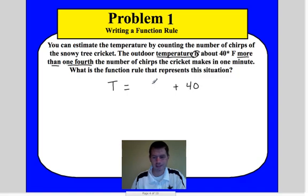The number of chirps. So let's say we'll call it C is the chirps that it makes. Well, we only want one-fourth of that. So it's one-fourth C. Okay, so we have T equals one-fourth C plus 40. There's your function rule.